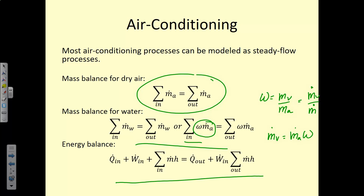The energy balance is applied the same as before: Q in plus work in plus mass flow rate times enthalpy in equals Q out plus work out plus mass flow rate times enthalpy out.